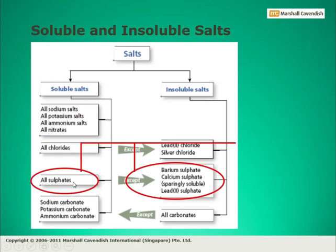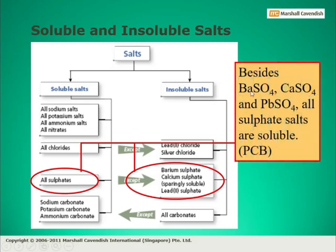The next category is sulfates. All sulfates are soluble, except barium sulfate, calcium sulfate (which is sparingly soluble), and lead(II) sulfate. Their formulas are BaSO₄ for barium sulfate, CaSO₄ for calcium sulfate, and PbSO₄ for lead(II) sulfate. These three sulfates are insoluble.